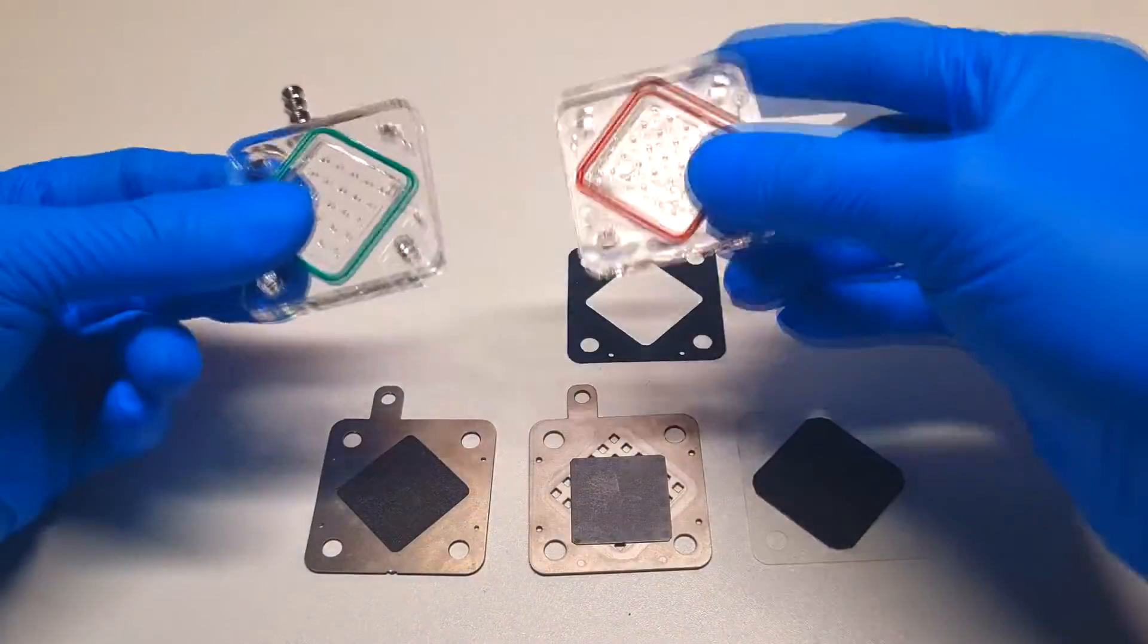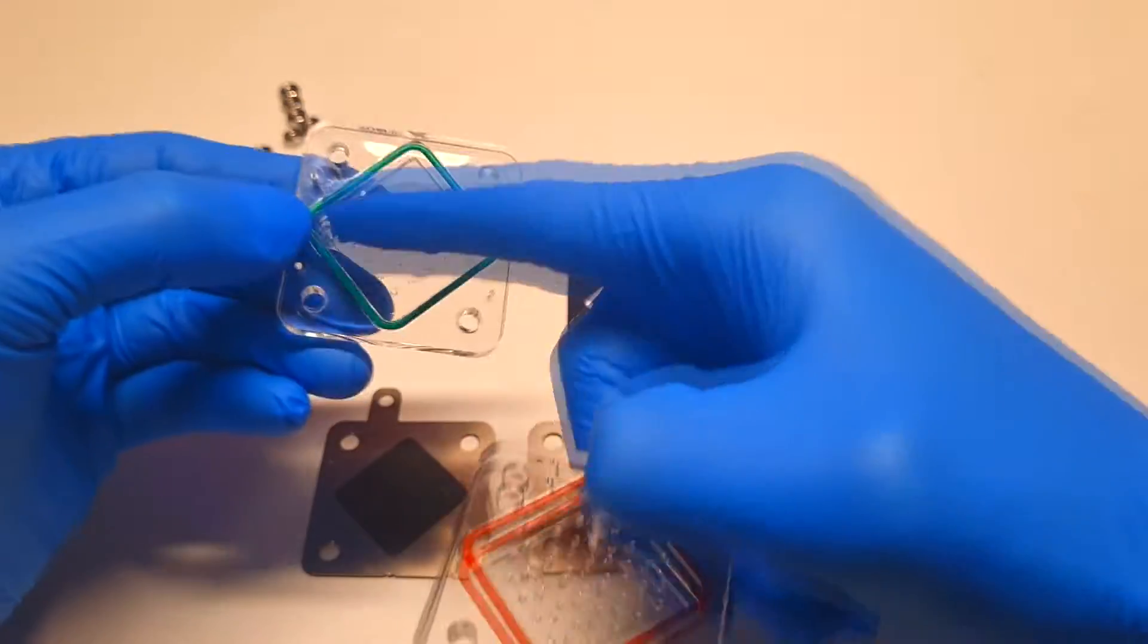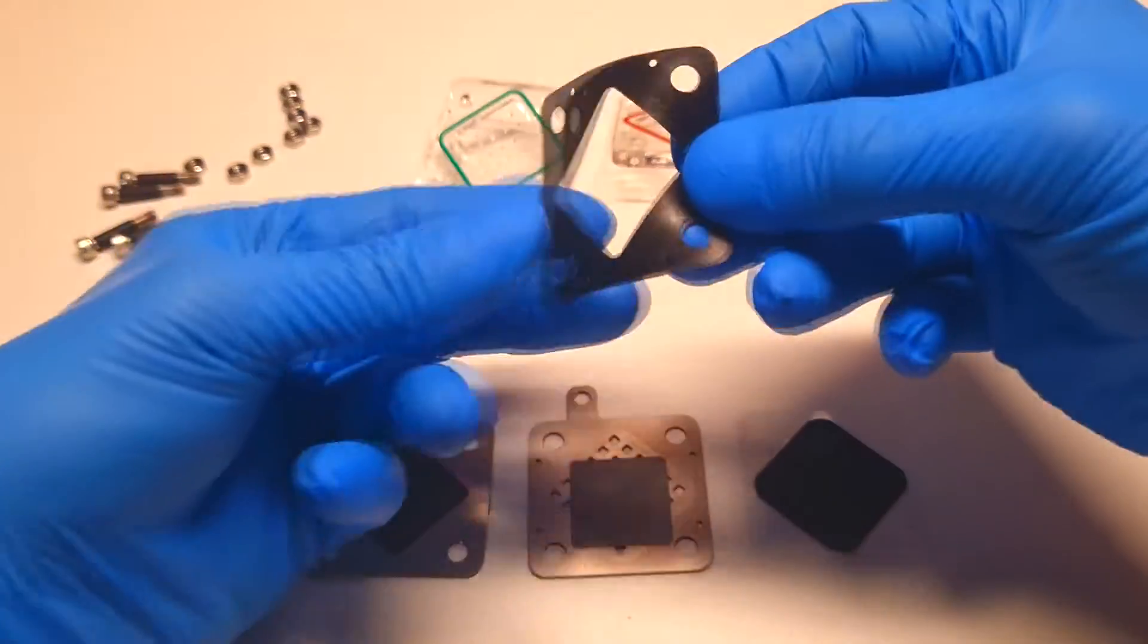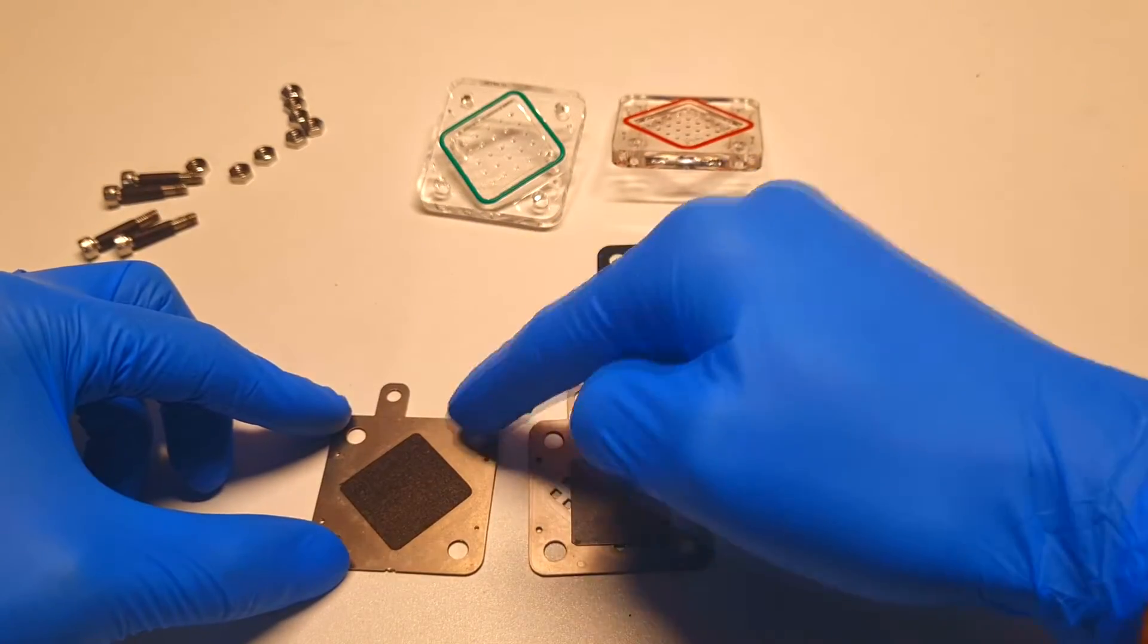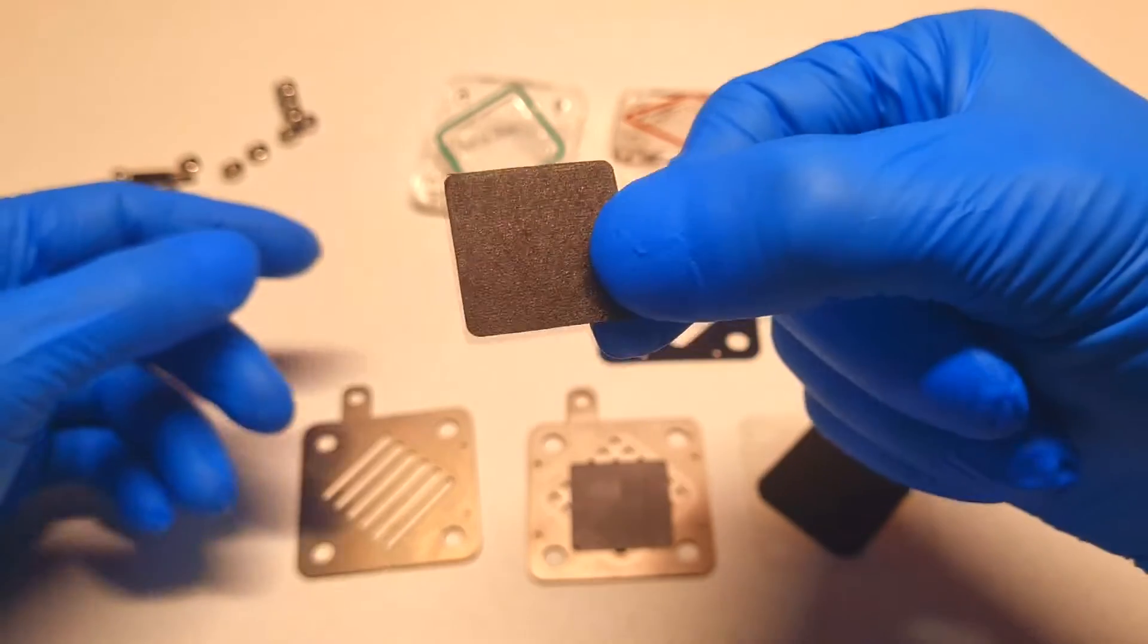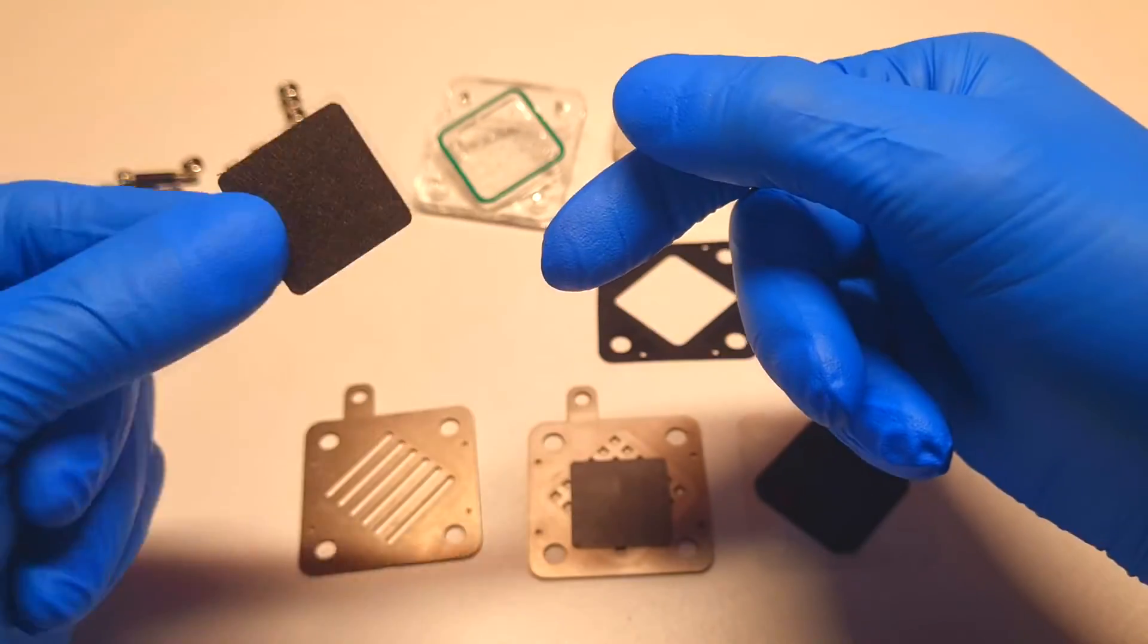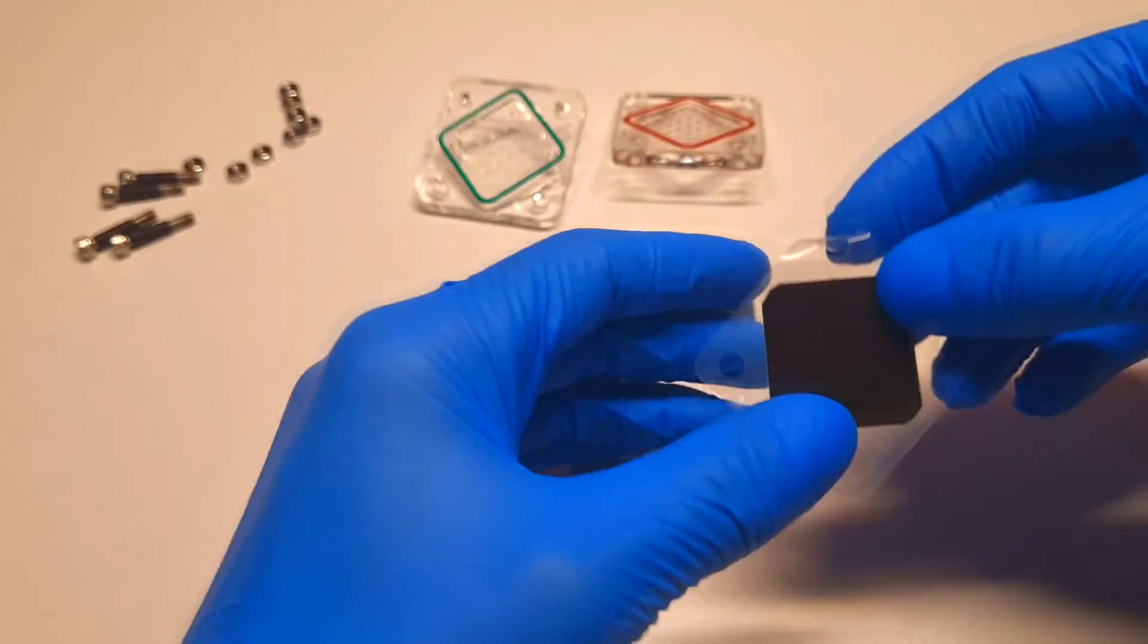Here we have the acrylic end plates with rubber gasket, metal gasket, some extra gasket, current collectors, carbon paper which is coated with catalyst, and the proton exchange membrane.